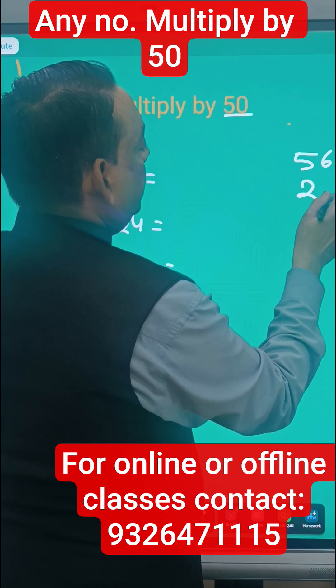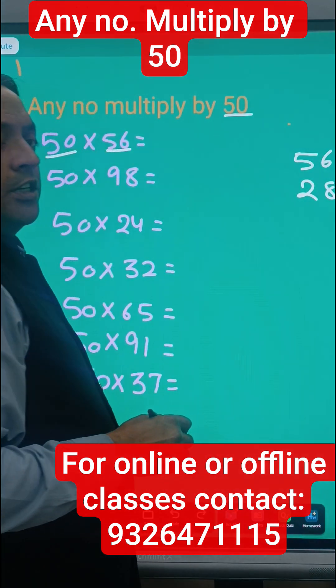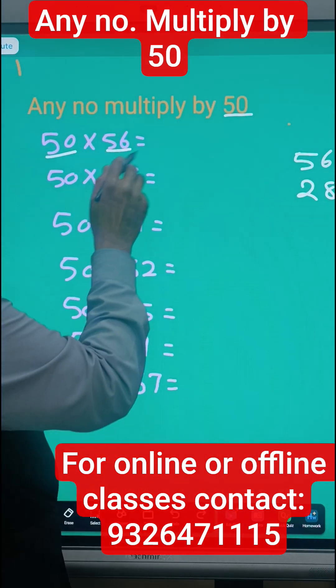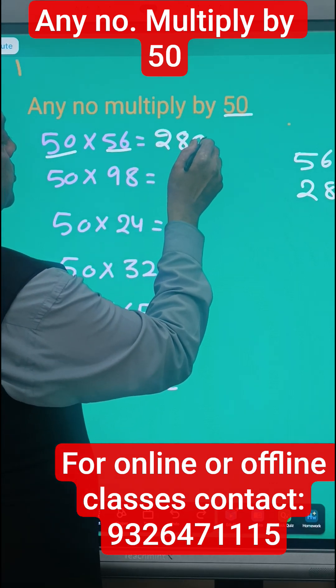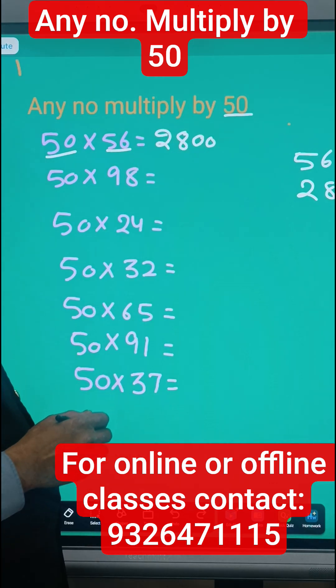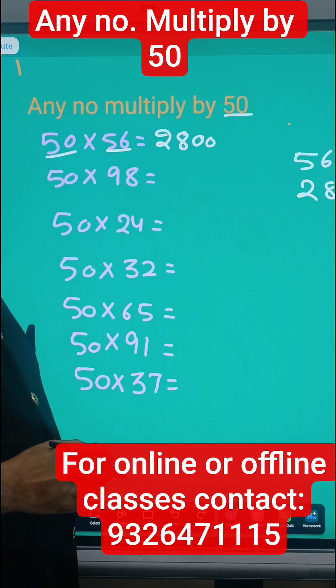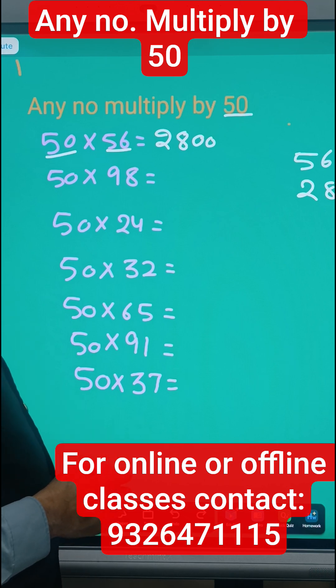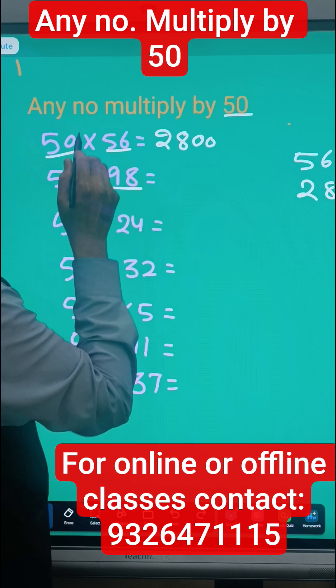And then just put the 00. So 56 ka half is 28, and 28 into 100, that is 2800. So whatever number given, any number multiply by 50 means you have to do: half the number, multiply by 100.